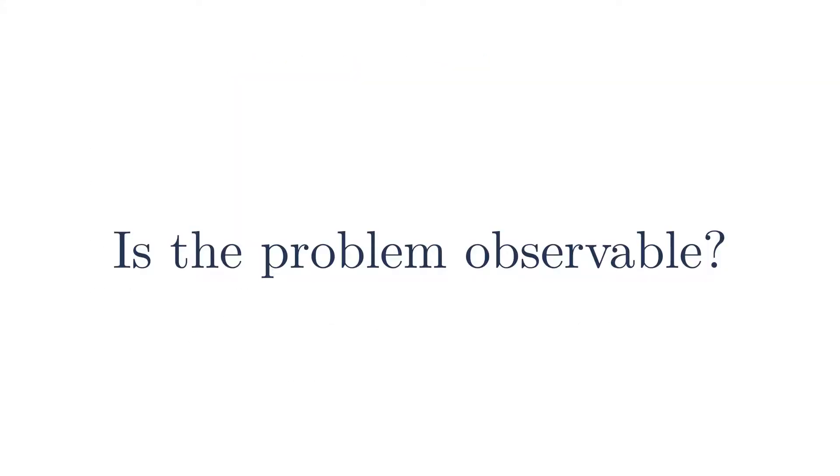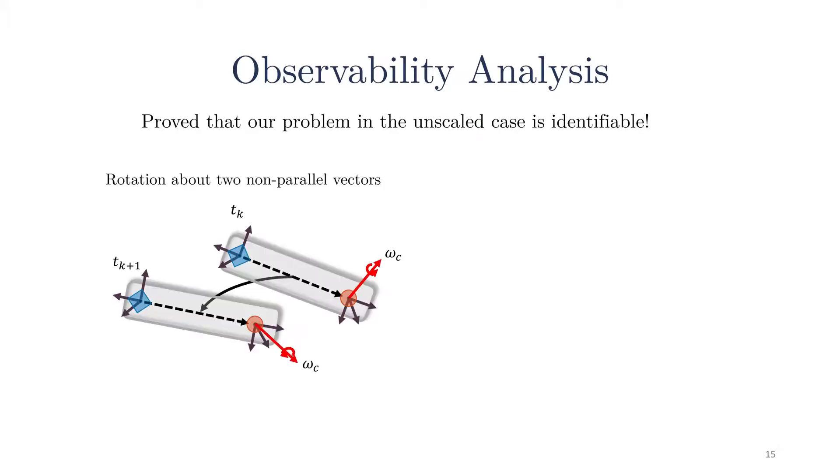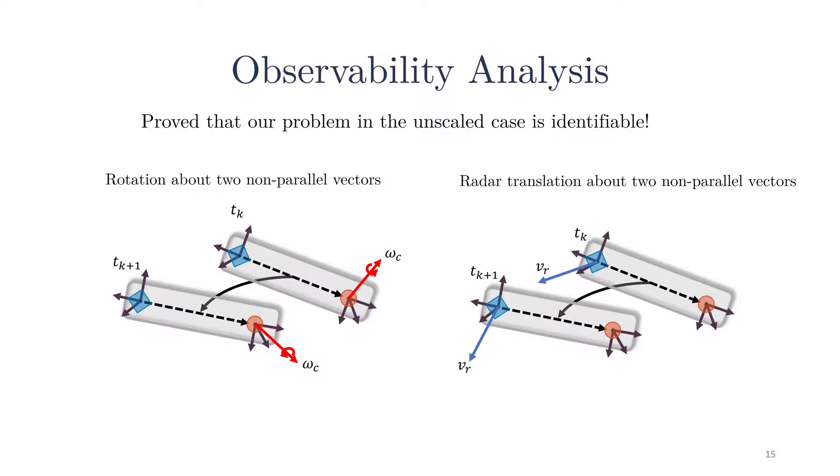Having formulated our problem, is it observable? To start, we proved that our calibration method was observable. The observability analysis determined two key excitation requirements. First, the system must experience rotation about two non-parallel vectors. This requirement is well established in the extrinsic calibration literature. To meet the second excitation requirement, the radar must translate about two non-parallel vectors. I would like to note that these two excitation requirements are not exhaustive. Additional requirements could be generated from our degeneracy analysis presented in our paper.